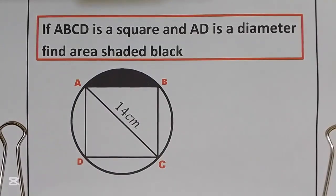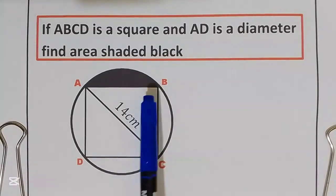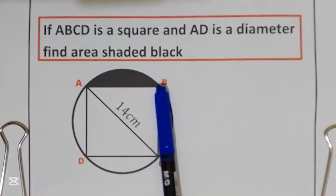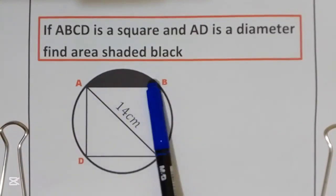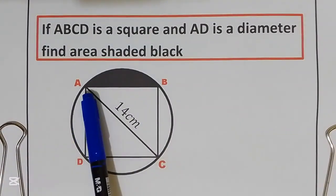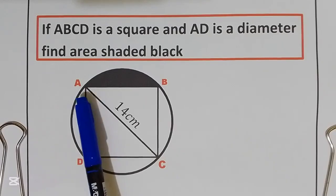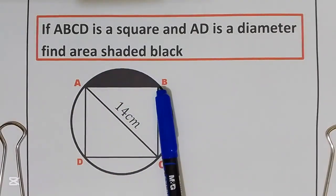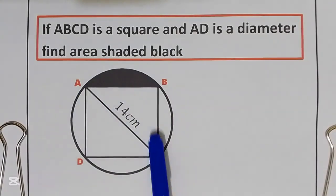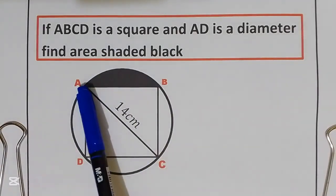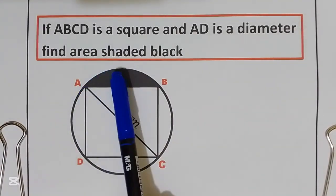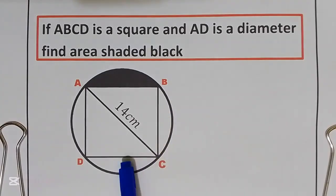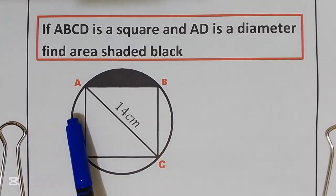What we are going to do here? We are going to first find the area of a circle, then we are going to find the area of the square. After that we are going to take the area of the circle and take away the area of our square. We are going to remain with this portion, this portion, this portion, and this portion.